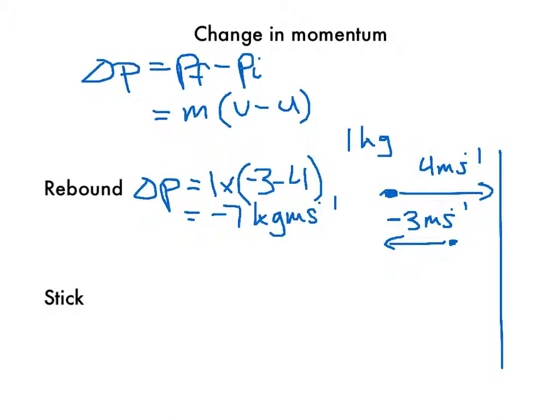If that ball had just stuck to the wall, its change in momentum would be similarly, one times final velocity would be zero, minus its initial velocity of four. So it has a change in momentum of negative four kilogram meters per second. So you can see the change in momentum was greater for something that rebounds than for something that sticks.